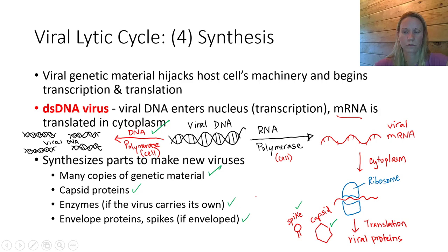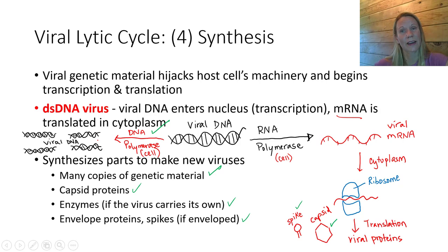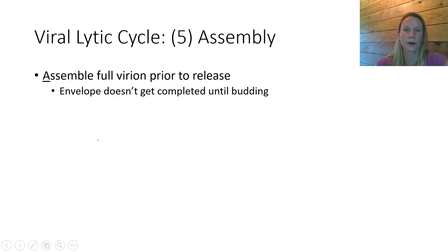Notice that after the synthesis stage the virus is in pieces — we've got capsid pieces, spike pieces, viral DNA — all the parts of the virus but not put together. That's like going to IKEA and buying a dresser where they give you all the pieces and you have to go home and assemble it. So that's stage five in the viral lytic cycle — we call that stage assembly, where we put all the pieces together that were built during the synthesis stage.